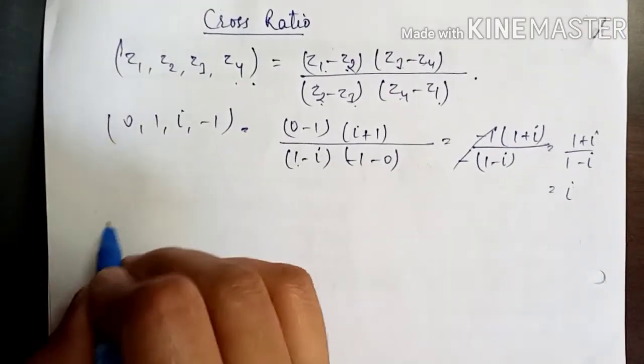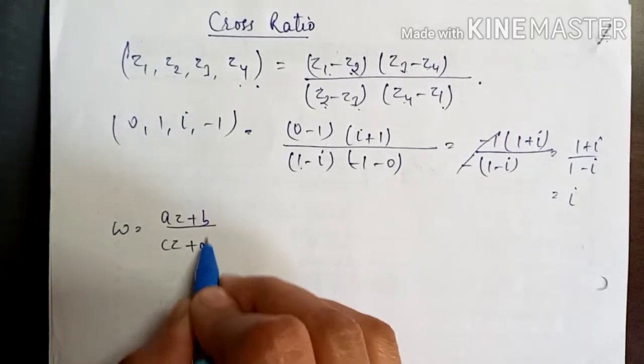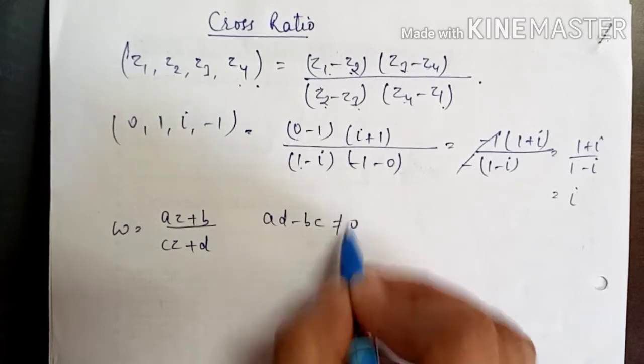What does that mean? If we have some Möbius transformation, AZ plus B by CZ plus D, such that AD minus BC is non-zero.